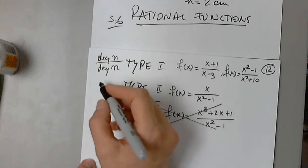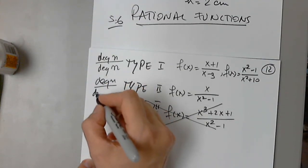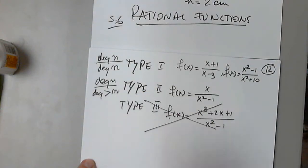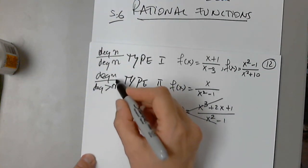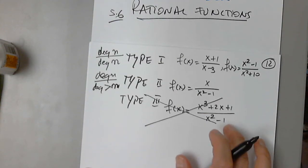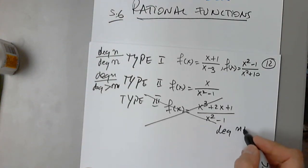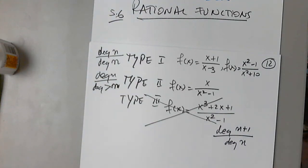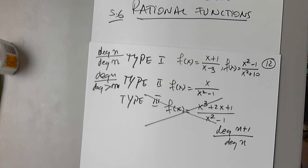What about type two? Higher in the denominator — degree n and degree greater than n. And type three: it is degree n plus 1 over degree n — exactly one unit higher. But I'm not going to show type three to you. I'm going to show the first two, which are basically the easiest ones. Type one has same degree over same degree. Type two, much higher degree in the denominator — it doesn't matter by how much.